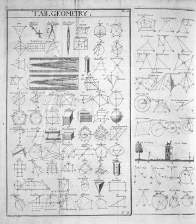Geometry was one of the two fields of pre-modern mathematics, the other being the study of numbers, arithmetic. Classic geometry was focused on compass and straightedge constructions. Geometry was revolutionized by Euclid, who introduced mathematical rigor and the axiomatic method still in use today.